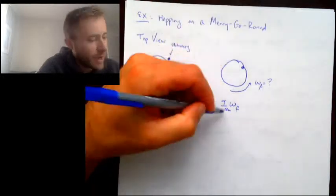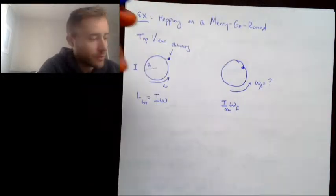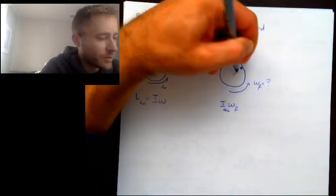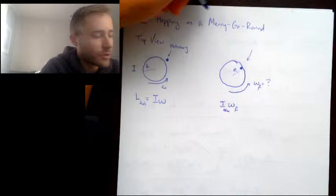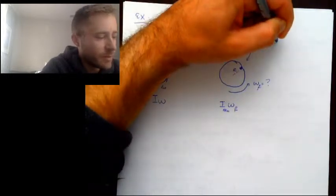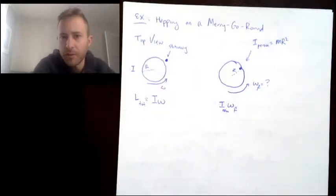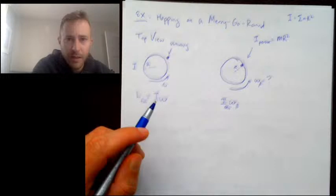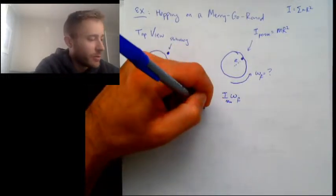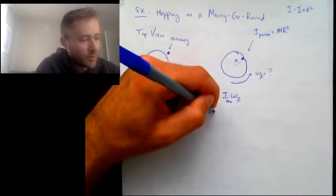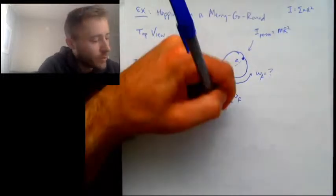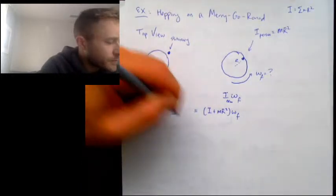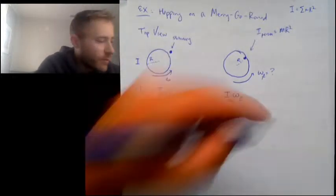What happens to the inertia when the person hops on? The inertia increases. The person going around the merry-go-round is a distance R from the center, so the inertia of the person is m times R-squared. The new total inertia is the original inertia of the merry-go-round plus the additional inertia from the person, multiplied by omega-final. We can use this equation to solve for omega-final.